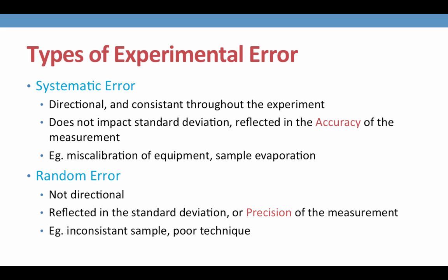The other type of experimental error is random error. Random error is not directional. As we can presume from the word random, the errors cause both positive and negative differences in the measured value. Random error will often appear as a large standard deviation, so a large range in the number of values around an average.